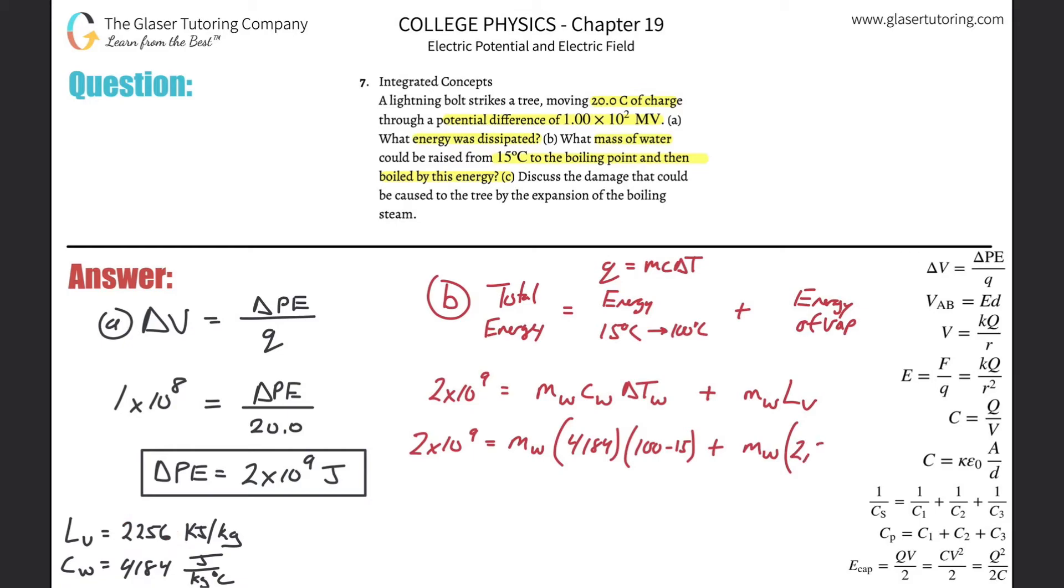Now we got all the units good. Notice how beautiful this is: one equation with one unknown. We can easily now solve that. So let's just simplify it. 2 times 10 to the 9th would be equal to—basically I realize that both terms have common